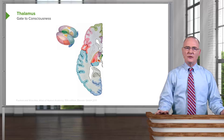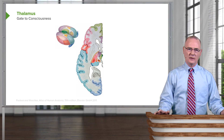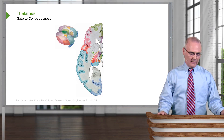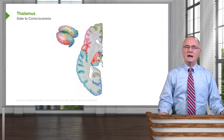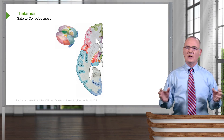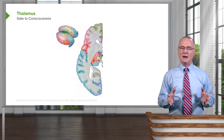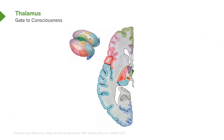The thalamus may be considered the gate to consciousness. Here we see the oval thalamic nuclei — these are bilateral structures. Each one of these bilateral structures contains multiple nuclear components, making this a very complex structure. In the axial view, we can see various thalamic nuclei and their relationships to one another.